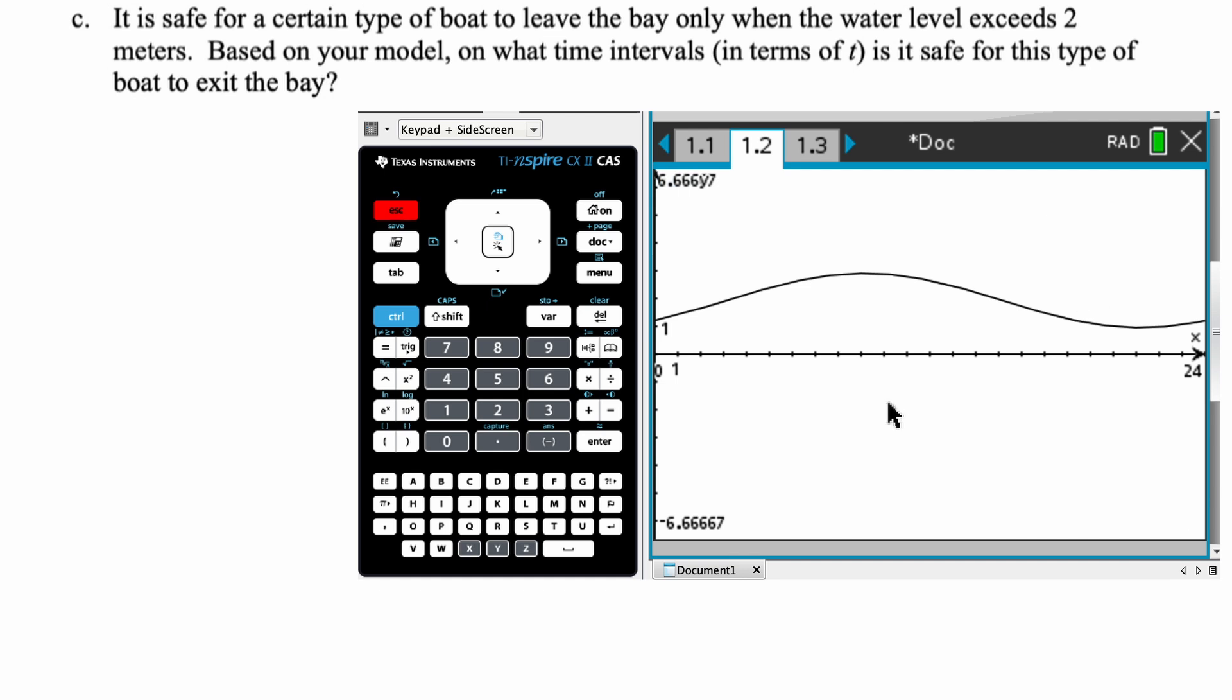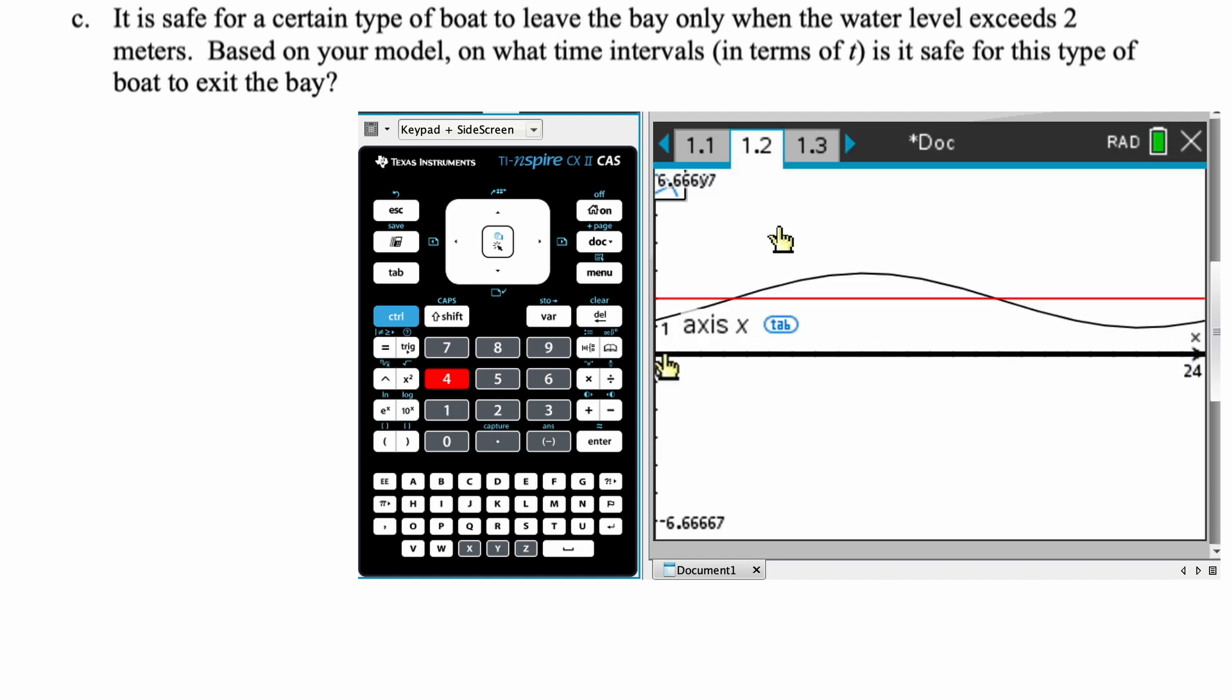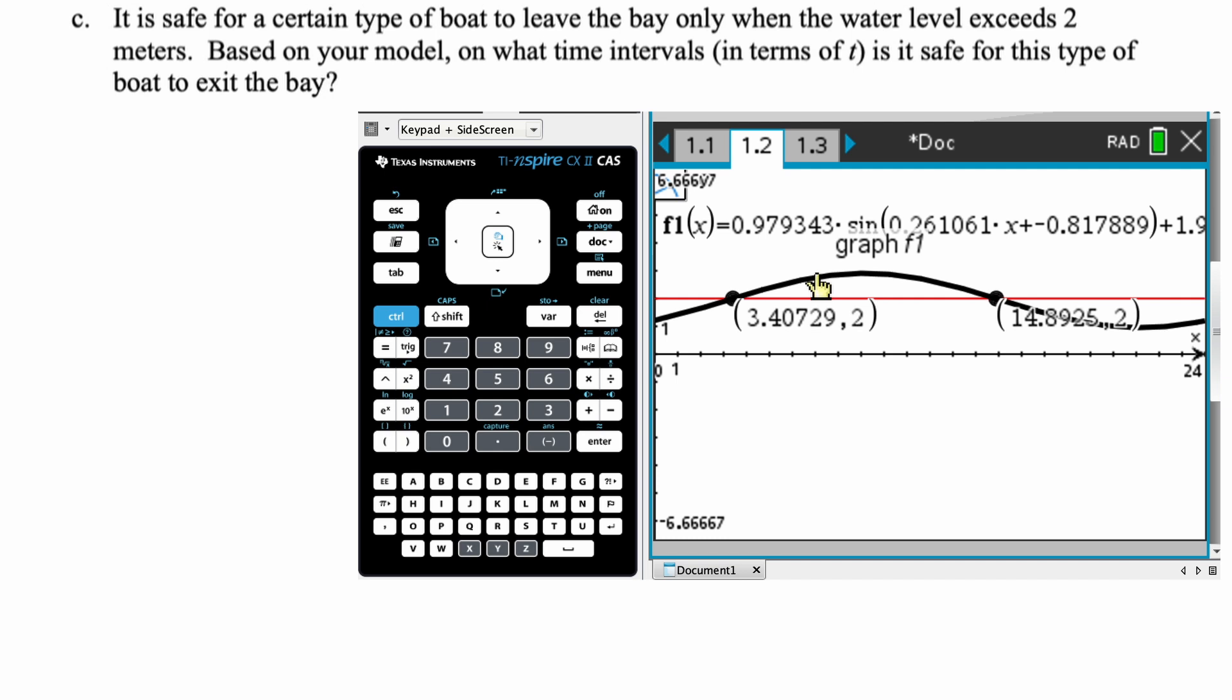I need to know when this graph is above 2, so I will press tab so that I can graph 2. And we have this. Then what I'm going to do is I'm going to use intersection. So that's menu 814. And we will click the first graph. Click the second graph. We get 3.40729 is the first time we hit 2. 14.8925 is the second time that we hit 2. The times that we are above 2 are in between those.